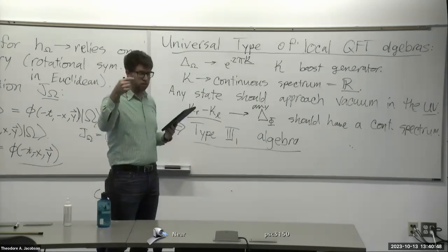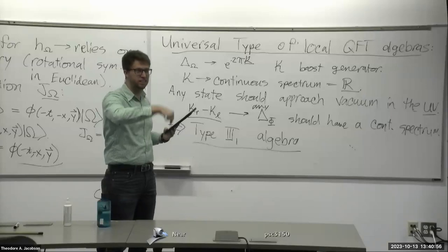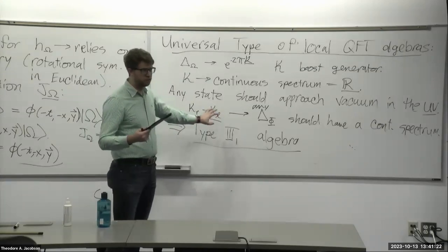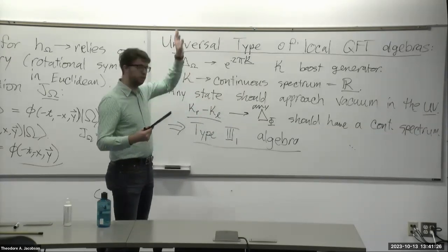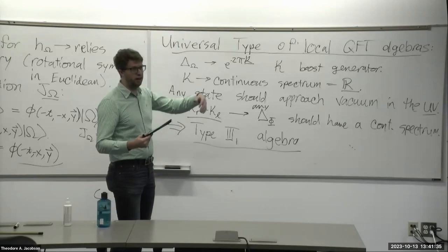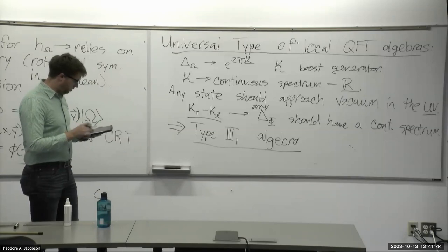A clarification from the chat: R in CRT is the spatial reflection — R reflects spatial coordinates, T reflects time, so RT is really what's happening. A second question about whether the modular operator could have continuous spectrum in the UV but discrete spectrum away from the UV regime: even if the IR is a bit discrete, by taking differences of two positive continuous spectra you fill out all of the real line, so the full spectrum remains continuous.